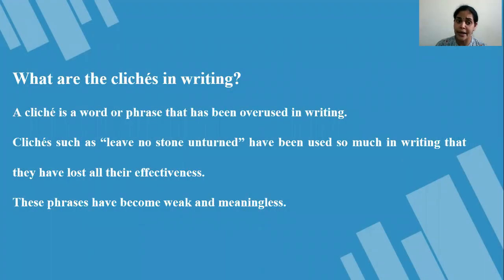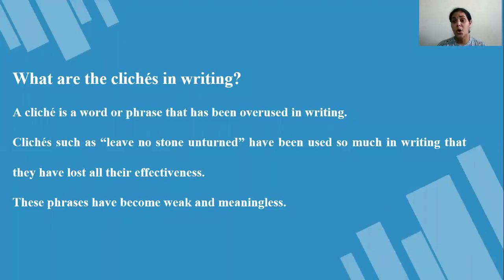What are clichés in writing? A cliché is a word or a phrase that has been overused in writing. For example, 'it is raining cats and dogs,' or 'all that glitters is not gold.' These phrases or groups of words have been overused and are now outdated — we are no longer using them, and they are addressed as clichés.